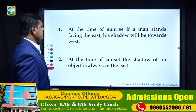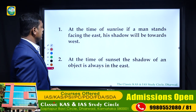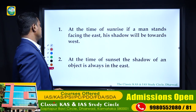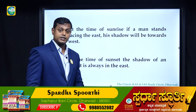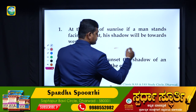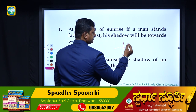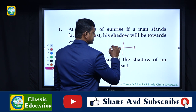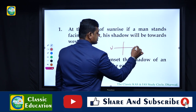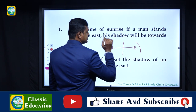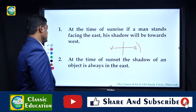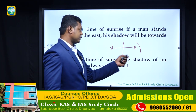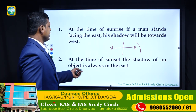At the time of sunrise, if a man stands facing east, his shadow will be towards the west. The sun rises in the east, so the shadow falls in the opposite direction - towards the west. This is the first shadow rule to remember.